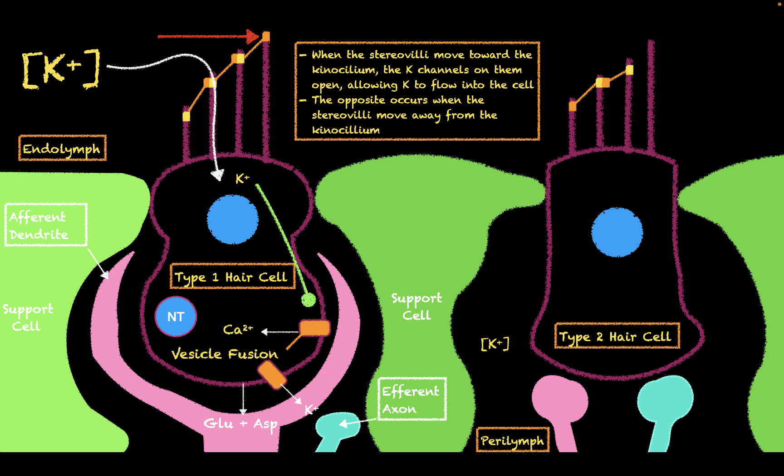There are two important concepts to gather from this. First, when the stereovilli move toward the kinocilium, the potassium channels open, allowing potassium to flow into the cell. However, the opposite occurs when the stereovilli move away from the kinocilium — the potassium channels close, which keeps potassium from entering the cell, decreasing the amount of calcium, decreasing vesicular fusion, and therefore decreasing the release of glutamate and aspartate.